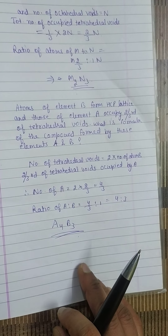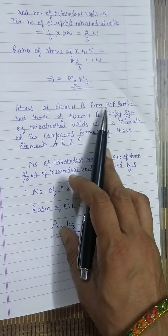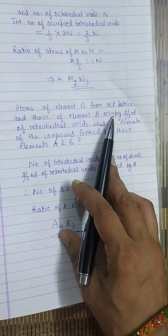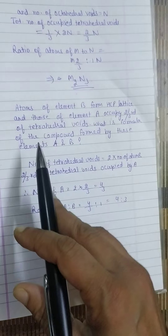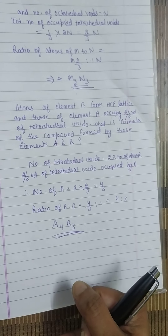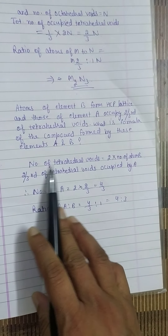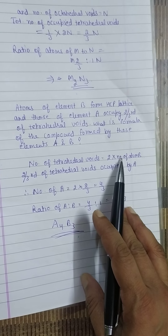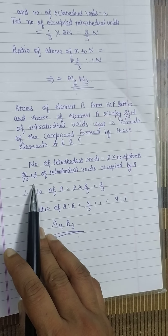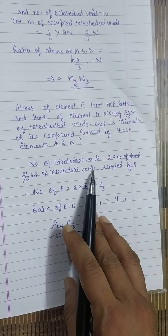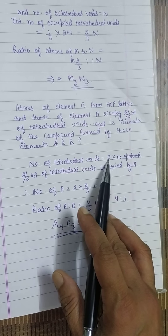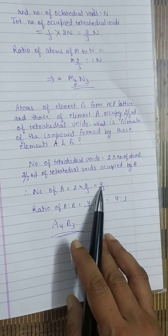Here is a similar numerical: atoms of element B form an HCP — hexagonal close packing — lattice, and atoms of element A occupy two-thirds of the tetrahedral voids. What is the formula? The number of tetrahedral voids equals 2 × number of atoms of B. Two-thirds of these tetrahedral voids are occupied by A, so number of atoms of A equals 2 × (2/3), which equals 4/3. Now take the ratio.